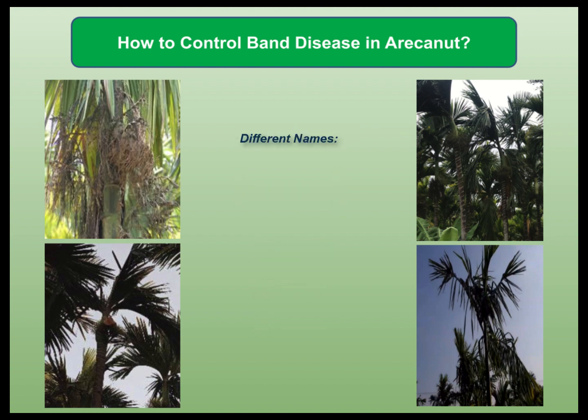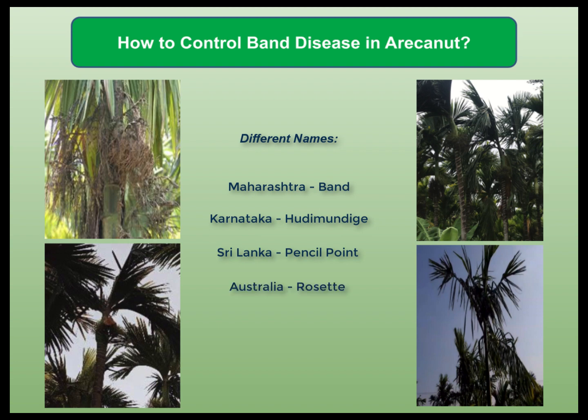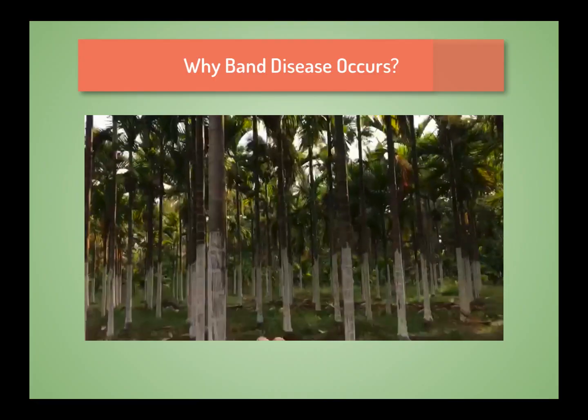This disease is called by different names in different regions. It is known as Band in Maharashtra, Hudi Mundike disease in Karnataka, Pencil Point disease in Sri Lanka, and Rossit disease in Australia.